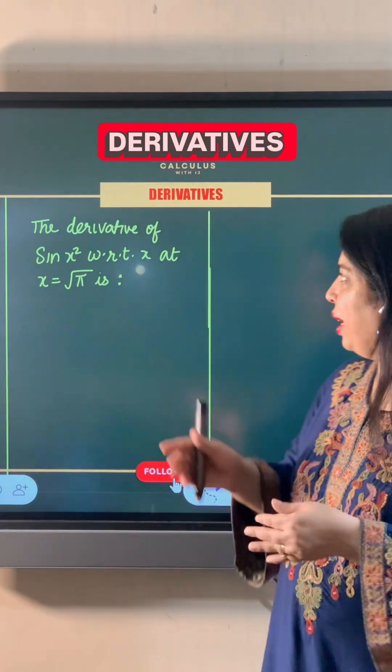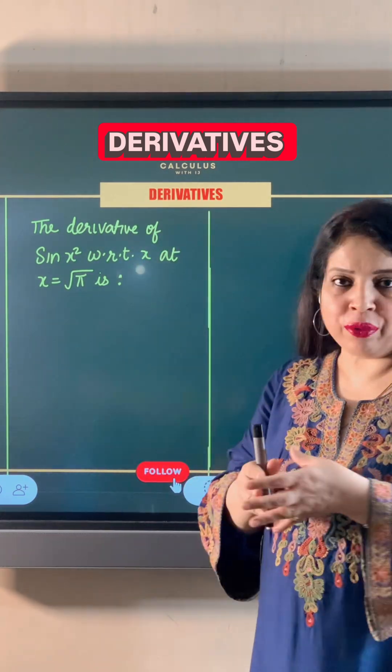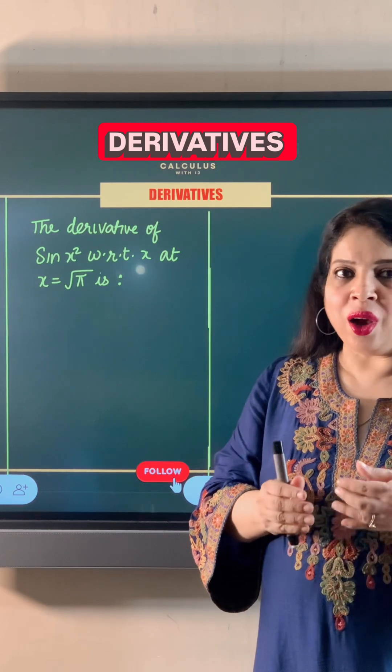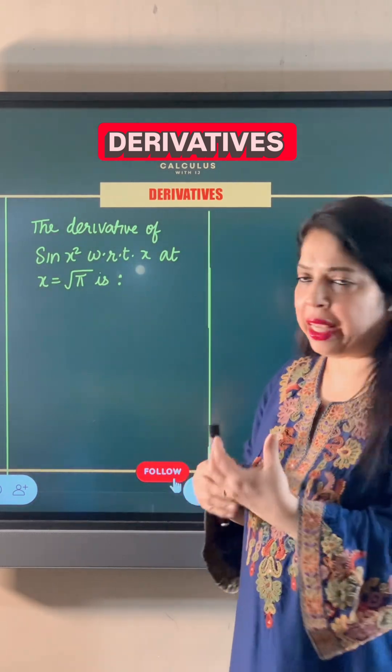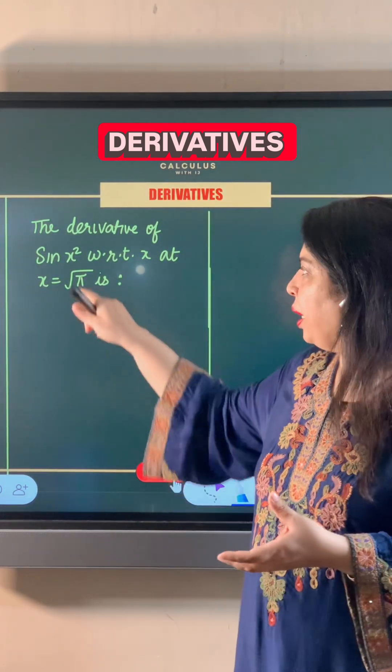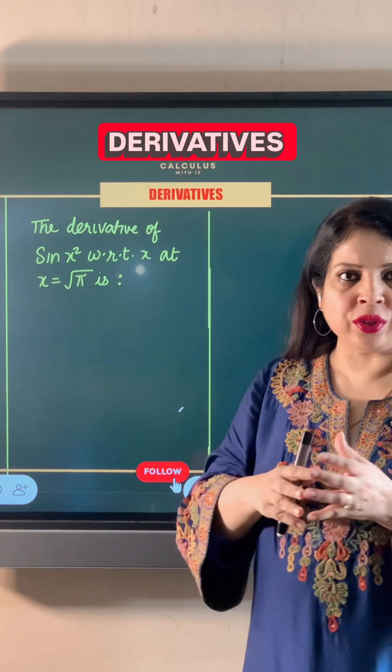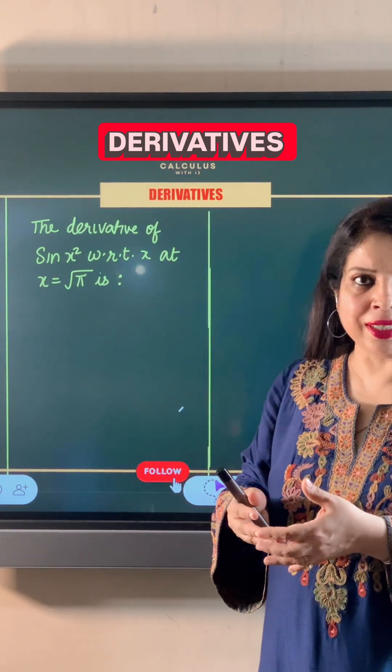In this question we have to find the derivative of sin x² with respect to x. Now derivative means the small change in value of this function with respect to some variable, which is x in this case.